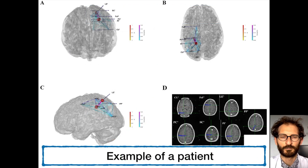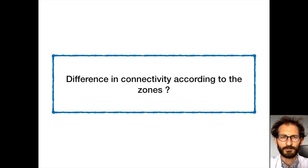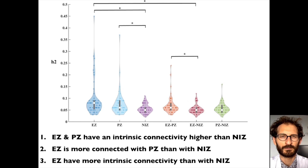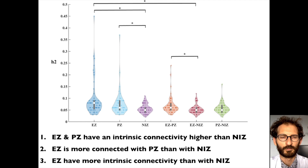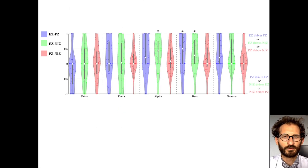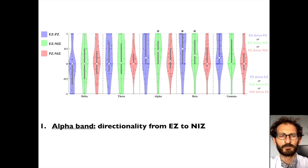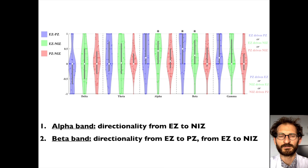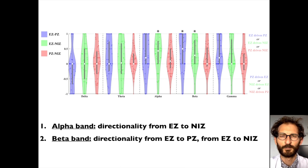Here is an example of the type of recording we have in a patient. Firstly, we found a difference in connectivity according to the zones. As you can see in this figure, there is higher functional connectivity within the epileptogenic zone and the propagation zone than within the non-involved zone. Moreover, the epileptogenic zone is more connected with the propagation zone than with the non-involved zone, and epileptogenic zones have more intrinsic connectivity than non-involved zones. Secondly, looking at directionality, we found in alpha-band analysis a directionality going from the epileptogenic area to the non-involved zone, and in beta-band analysis a directionality going from the epileptogenic zone to both the propagation zone and the non-involved zone, suggesting a leading role of the epileptogenic zone.